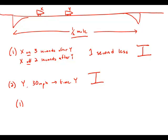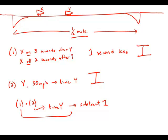Now we'll combine the two statements. From statement number two, we can figure out how much time Y spent on the bridge. And then from statement number one, we know that we just have to subtract one, and that will be how much time that X spent on the bridge. So combining the two statements, we now have sufficient information to answer the question. The answer is choice C.